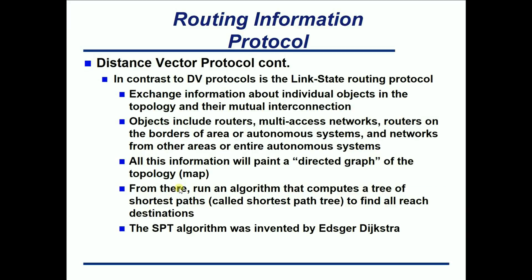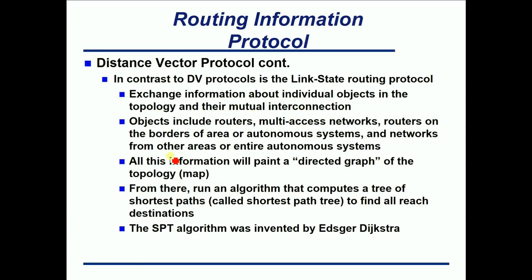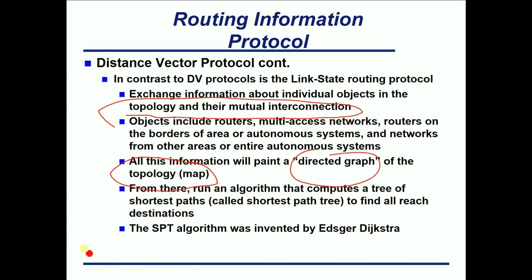In contrast to distance vector protocols, there is the link state routing protocol — OSPF and ISIS. What they do is exchange information about individual objects in the topology. They send everything they know about a network, and when they pass it on to routers in their area, they get to build a topology map or a directed graph. From there, everyone has the same picture and they are able to build a shortest path tree by running the shortest path algorithm invented by Edsger Dijkstra.